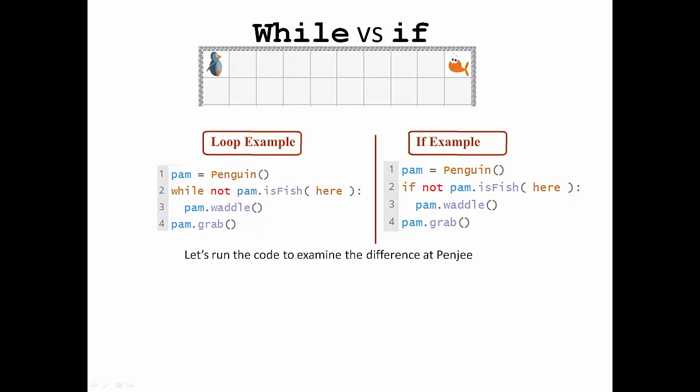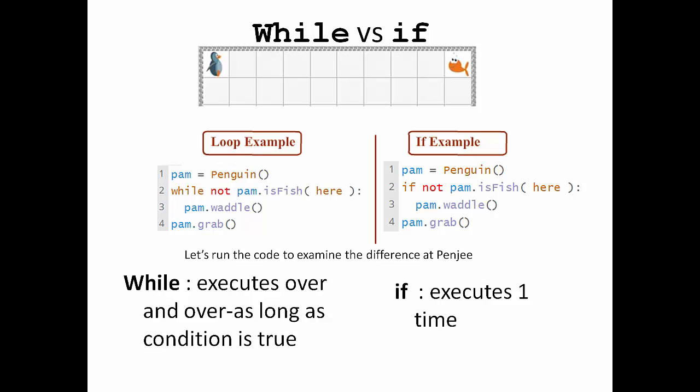And that's the main difference between our if statements and while loops. The while loop will execute over and over as long as a certain condition is true, but the if statement will only execute one time.